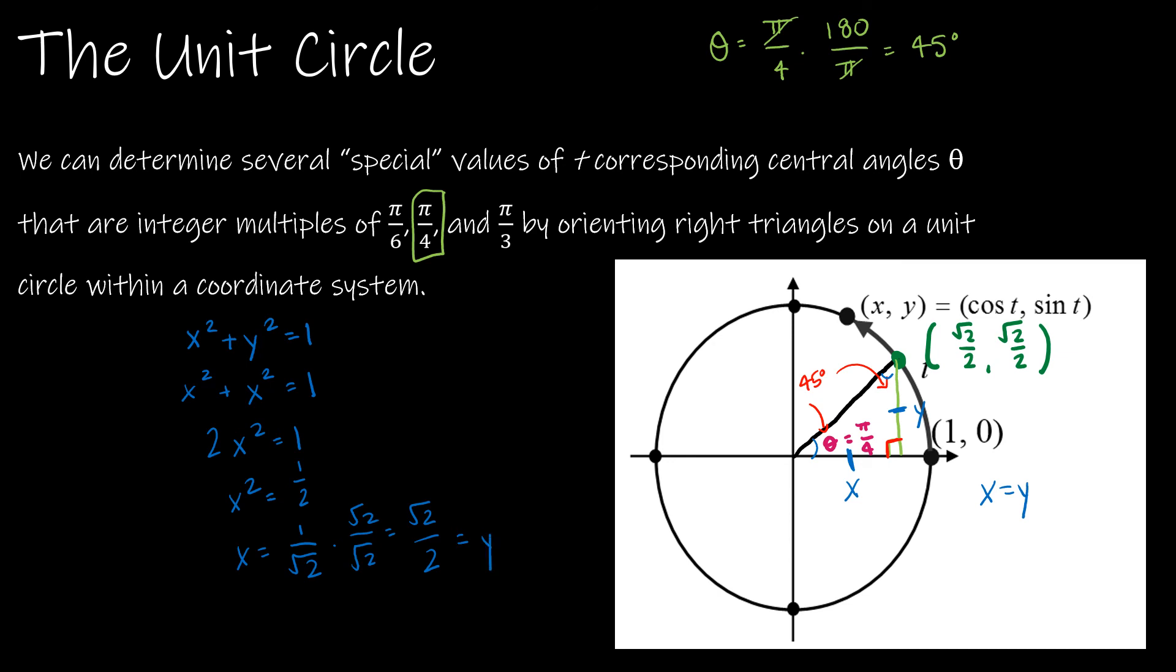And by rationalizing the denominator, I get √2 over 2. Now that's for x, but it's also for y, so if you'll notice, this point has √2 over 2, comma, √2 over 2, so that is the coordinate of that point.